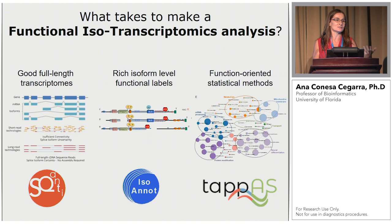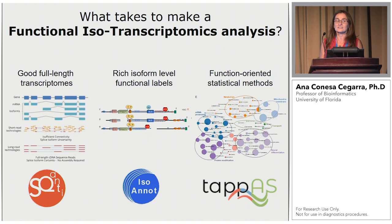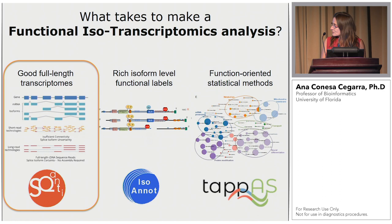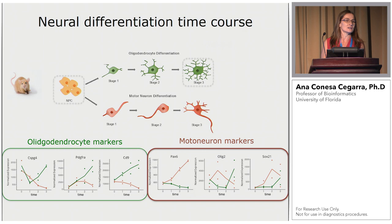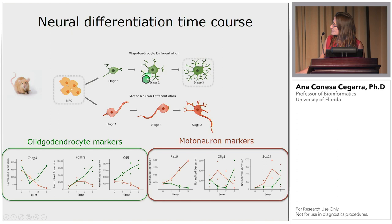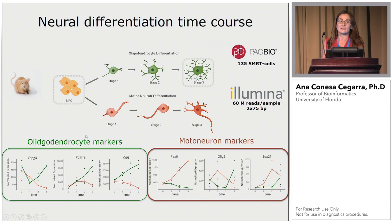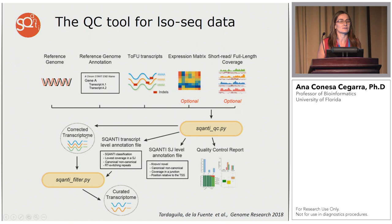These are very large projects and I don't have time to go into the details of all of them. I will try to give you some sketches of each so you have an idea of how we are thinking about these things. We have been doing these developments using a mouse neural differentiation system in which we start with NPCs — neuroprogenitor cells — and differentiate them to oligodendrocytes and motor neurons. We have a time course, and the data we generated was on this system, also with matching Illumina data.